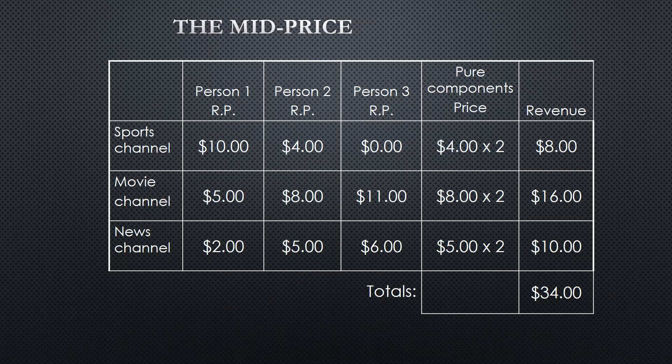But is this the best approach to capturing reciprocal value — the value we receive in return for offering value to these customers? This approach so far is pure component pricing, where we price each channel separately: sports at $4, movies at $8, and news at $5. What would happen if we bundled these together and priced them as one package deal?